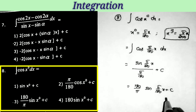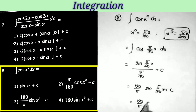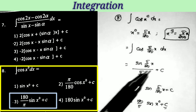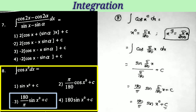So the answer equals 180/π · sin(π/180 · x) + c. What is π/180 · x? That is x degrees. So replacing back: the answer is 180/π · sin(x°) + c, which is the third option. That's all.